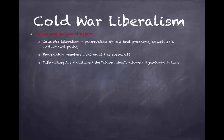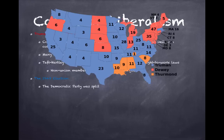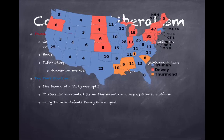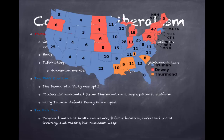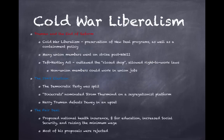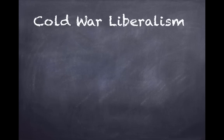Many union members went on strike after World War II, so Congress passed the Taft-Hartley Act over Truman's veto. It outlawed the closed shop, allowed right-to-work laws, and permitted non-union members to work in union jobs. In the 1948 election, the Democratic Party was split — Strom Thurmond ran in the South under the Dixiecrat Party on a segregationist platform. Truman defeated Dewey in a famous upset. Truman's Fair Deal proposed national health care, education funding, increased Social Security, and raising the minimum wage; his biggest successes were the minimum wage increase and expanded Social Security.